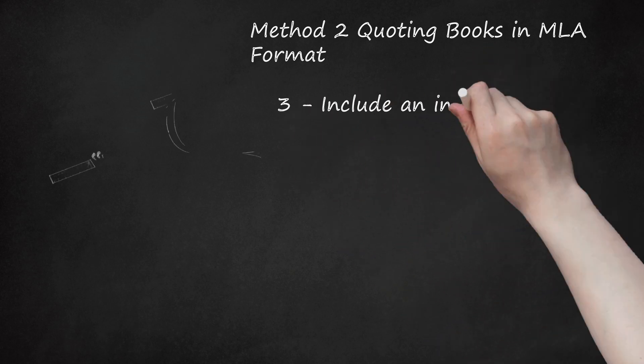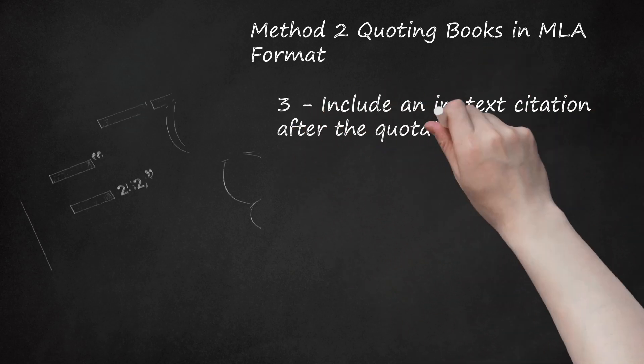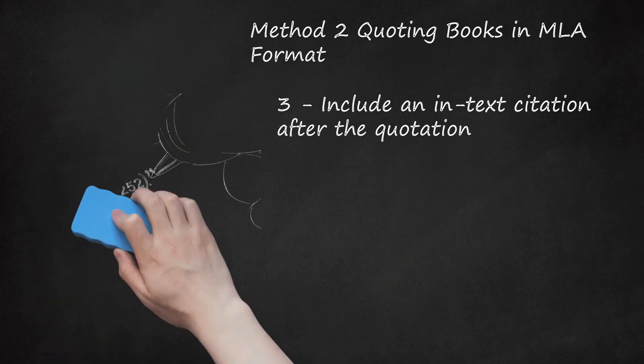Step 3: Include an in-text citation after the quotation. The author's last name and the page on which the quotation can be found should be included in parentheses at the end of the quotation before the next punctuation mark. This is called a parenthetical citation. For example: "maybe the best definition of art is simply Beauty plus Pity" (Nabokov, 251). If you reference the author's name before the quotation, you don't need to repeat it in the parentheses. For example: "Nabokov defined art as Beauty plus Pity" (251).